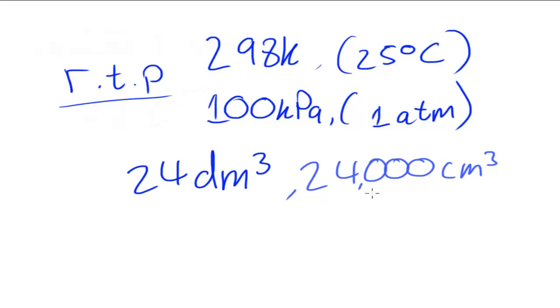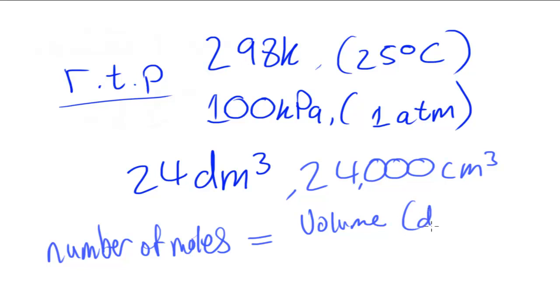And from this, we can figure out an equation, a general equation for this particular condition, room temperature and pressure. We can say that the number of moles, to find the number of moles from the volume, what we need to do is divide it by this. This being the molar volume, the volume occupied by one mole. So we divide the volume which we have. Let's say it's a volume in decimetres cubed. The volume in decimetres cubed, we divide it by the volume which one mole of gas would occupy in decimetres cubed, which would be 24. And from that, we would find the number of moles.